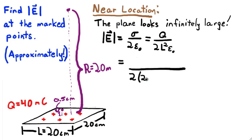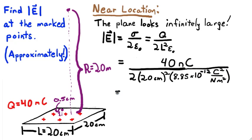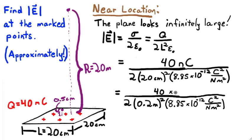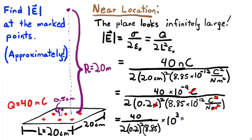Keep the units visible. We need to convert nanocoulombs to coulombs and centimeters to meters before we can cancel the units. Now organize all the powers of 10 and the other numerical factors separately. We could grab our calculators now, but it's a good idea to quickly try to approximate the answer so we know what to expect. 8.85 is about 10, and 40 over 20 is 2. Dividing by .2 twice is like multiplying by 5 twice, which gives 50. The calculator says 56.5, which gives us our final answer.